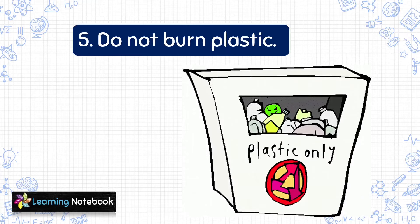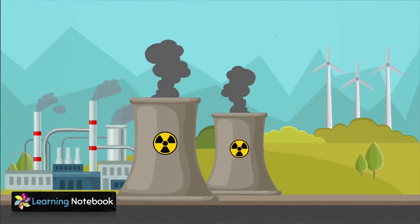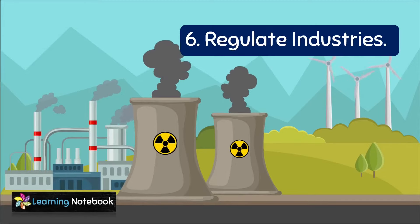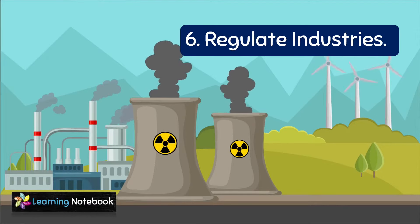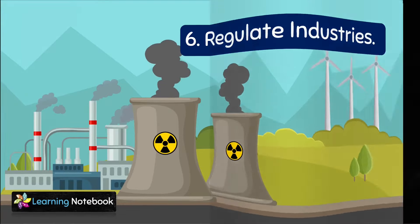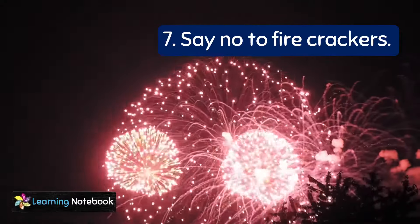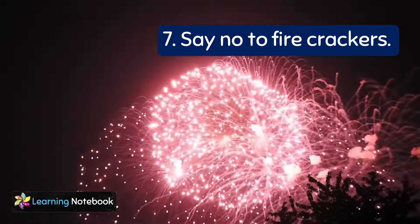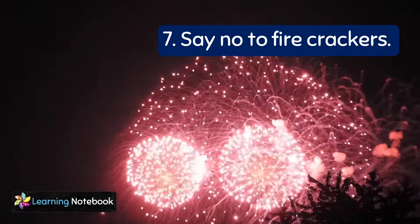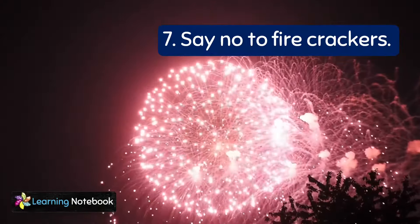The next step is: do not burn plastic. We should look to recycle plastic and not burn it, as its burning causes a lot of air pollution. The sixth step to reduce air pollution is to regulate industries — industries should strictly follow government rules and regulations to control air pollution. And the last step is to say no to firecrackers, as burning crackers causes a major amount of air pollution.